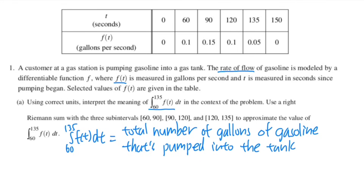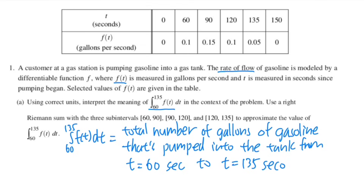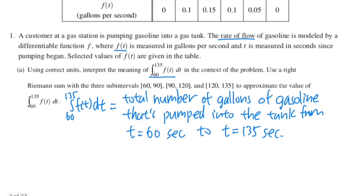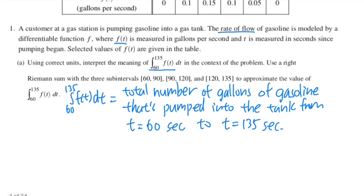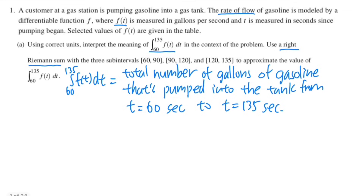The integral from 60 to 135 gives the total gallons pumped from t = 60 seconds to t = 135 seconds. Now the second part asks us to use a right Riemann sum — that's the right endpoint rectangle approximation — and we're given three intervals.